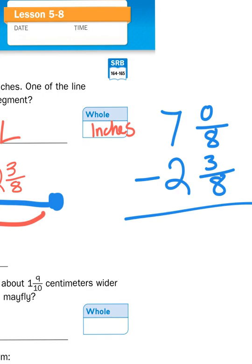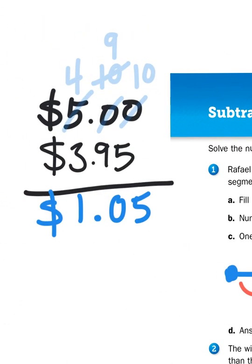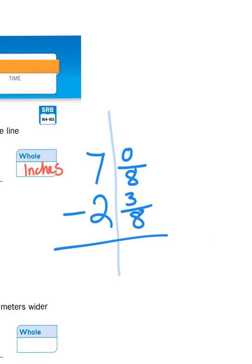I'm going to subtract 7 and 0/8 minus 2⅜. So I start with the fractional part first. I want to subtract zero minus three. Now, I can't do that without regrouping. Just like over here, I could not take away five cents from no cents. I had to borrow some cents from a dollar. So I had to regroup. I don't have any fractional parts on my top number. So I have to take my whole number seven and make it six.